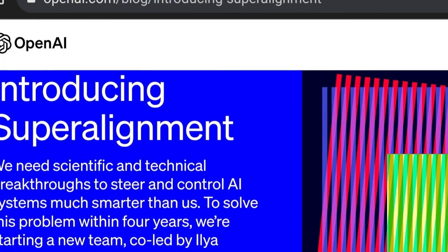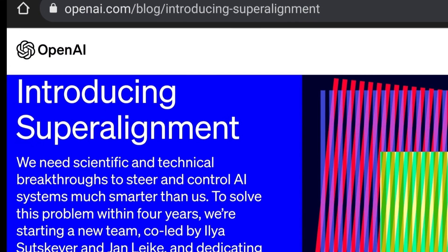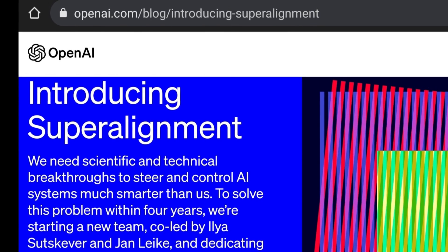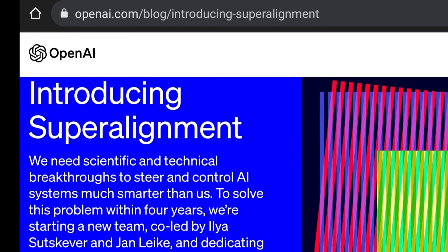That's why OpenAI's SuperAlignment team is working hard to solve this problem. They are developing new techniques and methods to train, validate, interpret, and test AI systems that are much smarter than us.